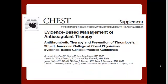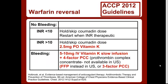I want to go through the recommendations for a supratherapeutic INR. These come from the ACCP guidelines from 2012. You first want to start by splitting it into: are they bleeding or not bleeding? If they're not bleeding, check an INR. The new recommendation, different from the 2008 American College of Chest Physicians recommendations, sets the cutoff at an INR of 10.